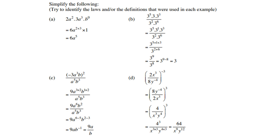Part b: 3 to the power 5 times 3 to the power 1 times 3 to the power 3, all over 3 to the power 2 times 3 to the power 6. All terms have the same base, so add the exponents on top: 5 plus 1 plus 3 gives 3 to the power 9. On the bottom: 3 to the power 8. Subtract to get 3 to the power 1, which is 3.